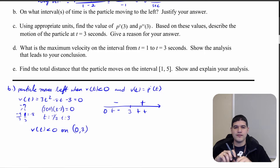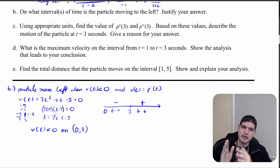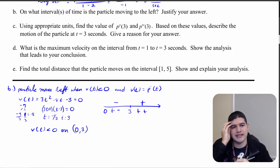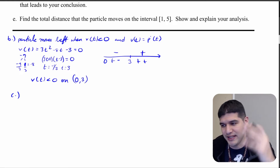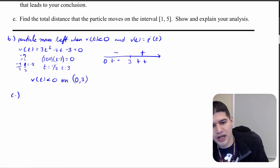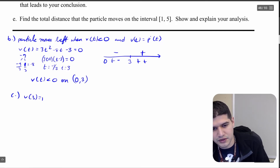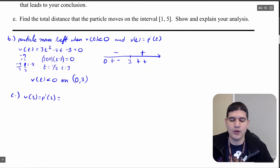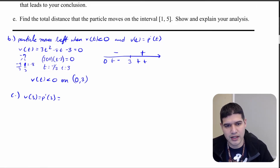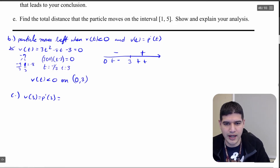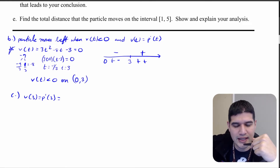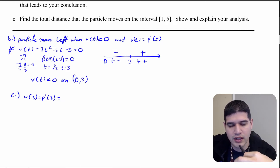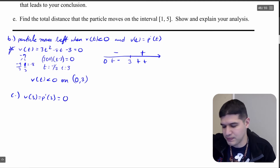Now part c: find p'(3) and p''(3) and describe what's happening to the motion of the particle at t = 3 seconds. We already have v(t) = p'(t) = 3t² - 8t - 3. Evaluating at t = 3: p'(3) = 3(9) - 8(3) - 3 = 27 - 24 - 3 = 0. So p'(3) = 0.